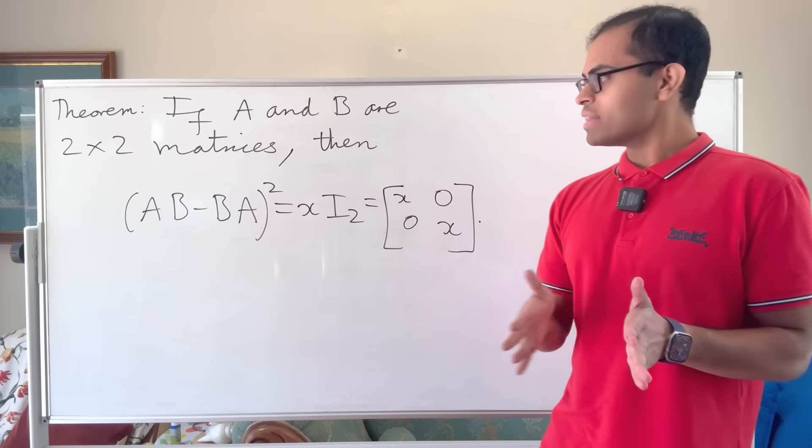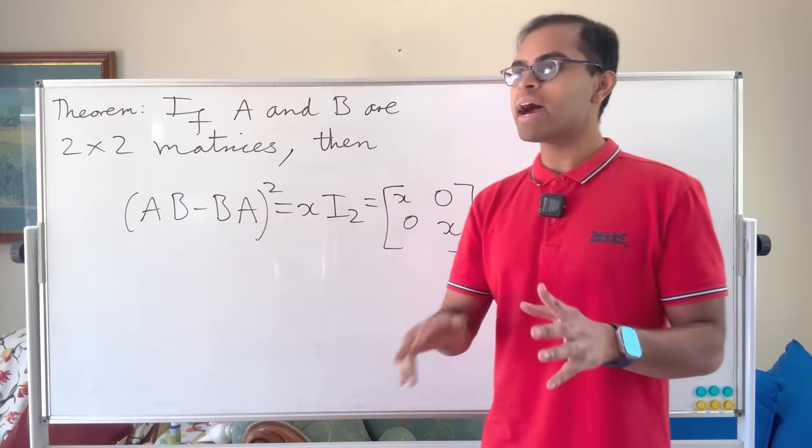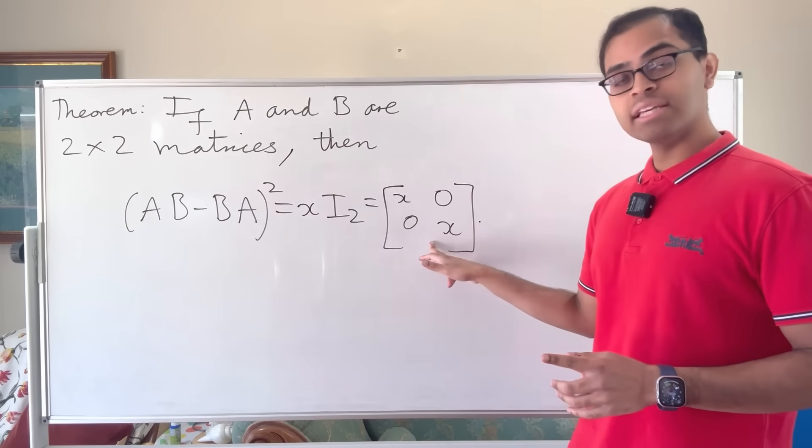Of course, you should be aware that AB may not be equal to BA. There are examples of that for 2 by 2 matrices. Does not matter. Take that difference, square it, you'll get this.